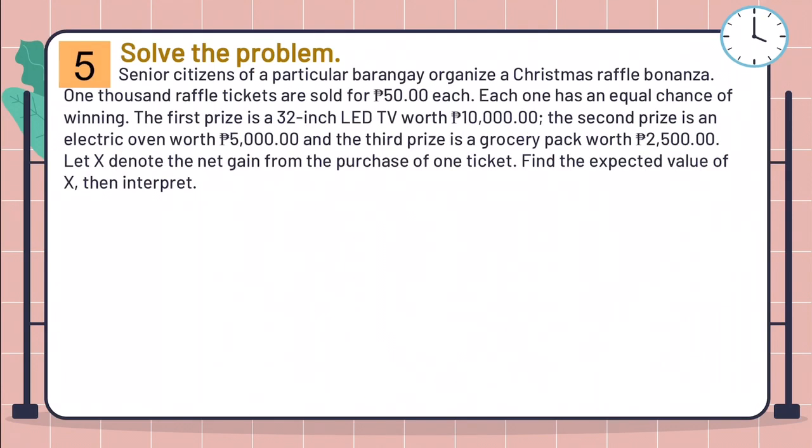For the last example, senior citizens of a particular barangay organized a Christmas raffle bonanza. 1,000 raffle tickets are sold for 50 pesos each. Each one has an equal chance of winning. The first prize is a 32-inch LED TV worth 10,000 pesos. The second prize is an electric oven worth 5,000 pesos. And the third prize is a grocery pack worth 2,500 pesos.